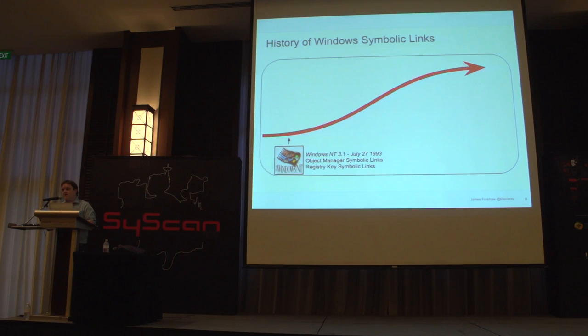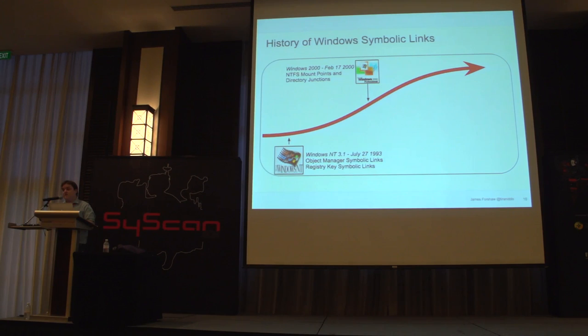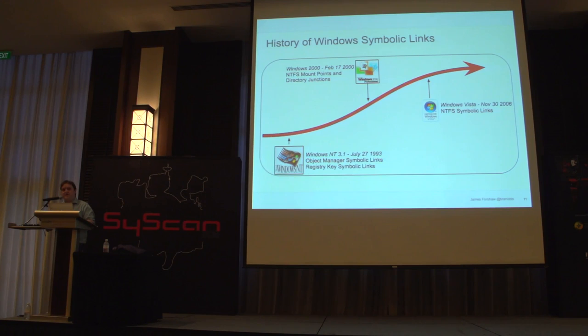Those weren't file-related — they were underlying mechanisms used by the operating system. It wasn't until Windows 2000 that the first file-level symbolic link came about: the NTFS mount points or directory junctions. These only worked as directory redirection — you have a directory and you can point it at another directory or another drive. You'd have to wait until Vista — that wonderful operating system everyone remembers fondly — to finally get full file-level symbolic links, in 2006. So it's a progression of 13 years between versions.